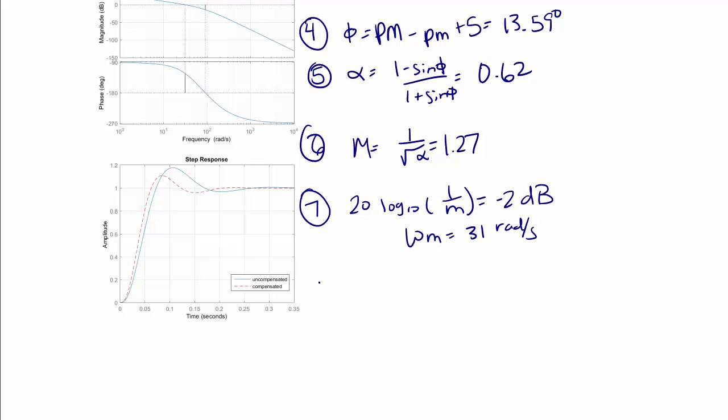Step 8. We find that lead compensator corner frequencies, so T lead, is equal to 1 over omega sub m times the square root of alpha, which is equal to 0.041.